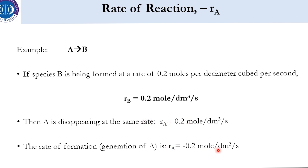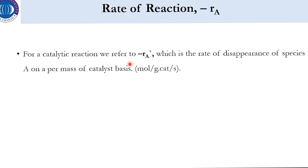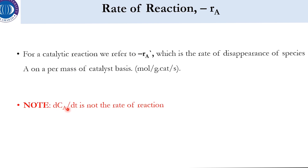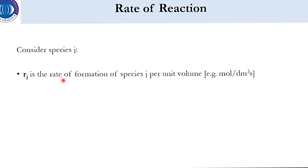The rate of formation of A would be r_A = −0.2 mol/(dm³·s). For catalytic reactions, we write minus r_A prime, which refers to the rate of disappearance of species A per mass of catalyst — units are mol per gram of catalyst. So remember: minus r_A is in terms of volume (non-catalytic), while minus r_A prime is in terms of mass of catalyst (catalytic). Also, dC_A/dt — change in concentration per time — although it has the same units as rate, it is not the rate of reaction.